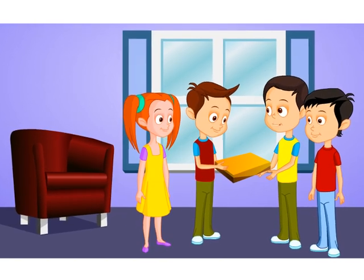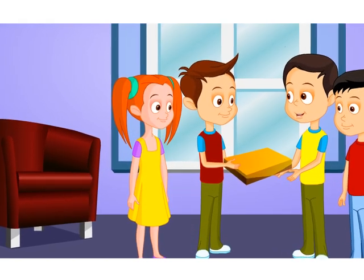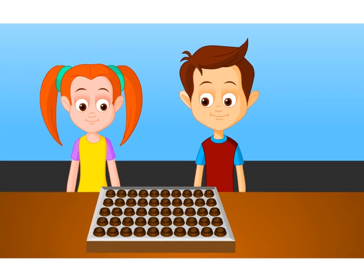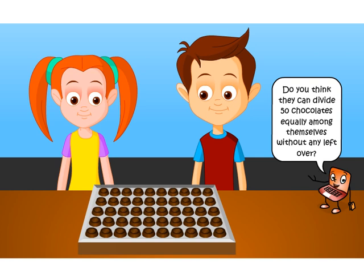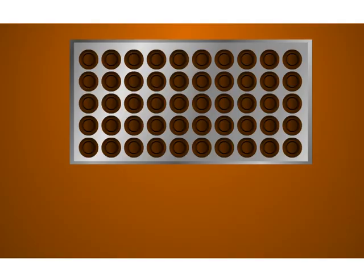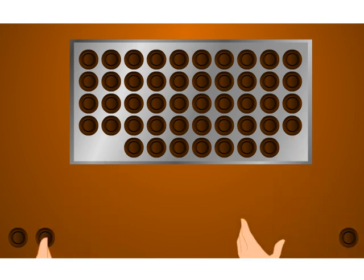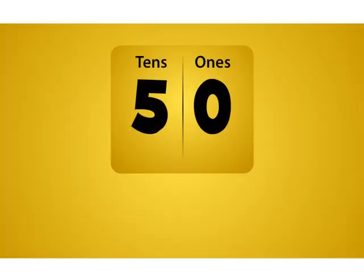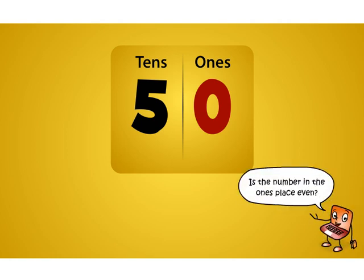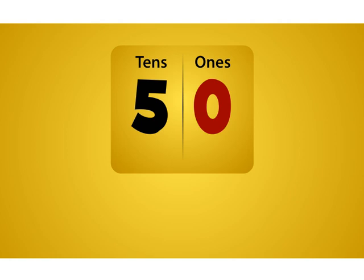Now Jack's cousins visit them and give them a pack of 50 chocolates. Jack and Tina are wondering if they can divide it equally. Do you think they can divide 50 chocolates equally among themselves without any left over? One way is by dividing them one by one, but that will take a long time. Let's look for an easier way: take the number 50 and look at the digit in the ones place. Is the number in the ones place even? Yes.